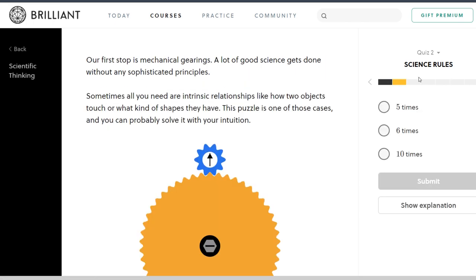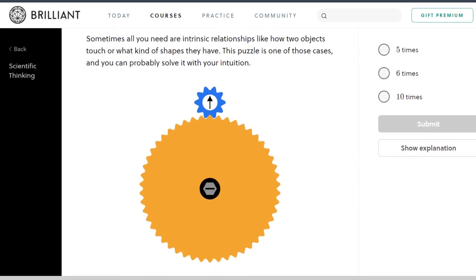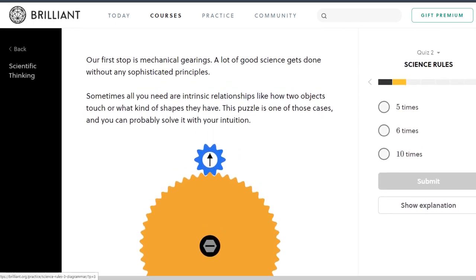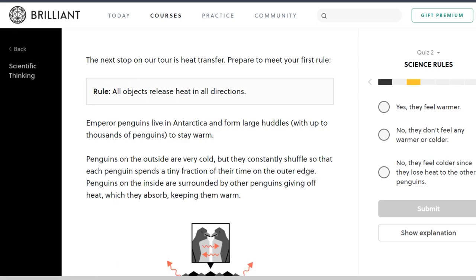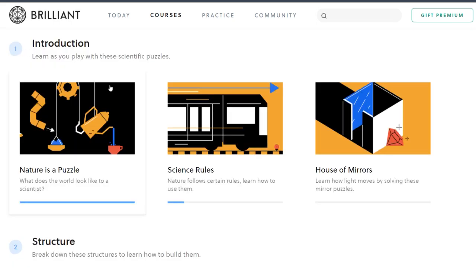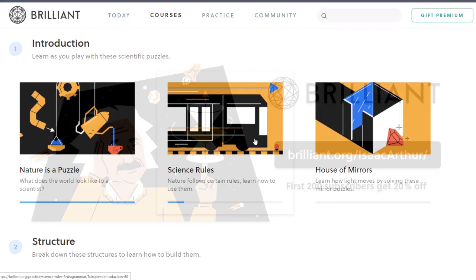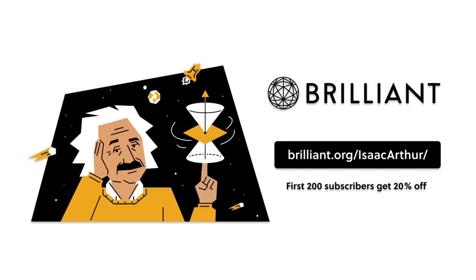If you're looking to improve your own skills in math, science, and computer science, and want to help support our show and have fun while you're doing it, or know someone else who would, you can try Brilliant out for free or get it as a gift for a loved one by going to Brilliant.org slash Isaac Arthur.